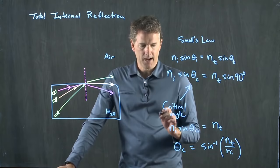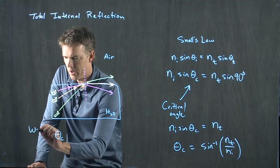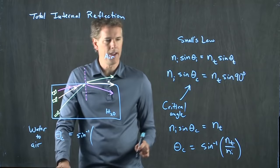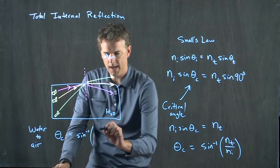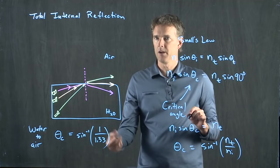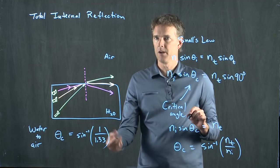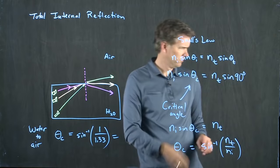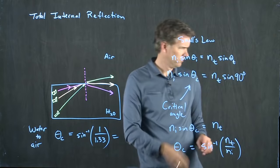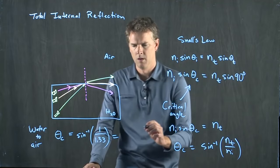For water to air, θC = arcsin(NT / NI) = arcsin(1 / 1.33). What is the arcsin of one over 1.33? The answer is 48.75 degrees.